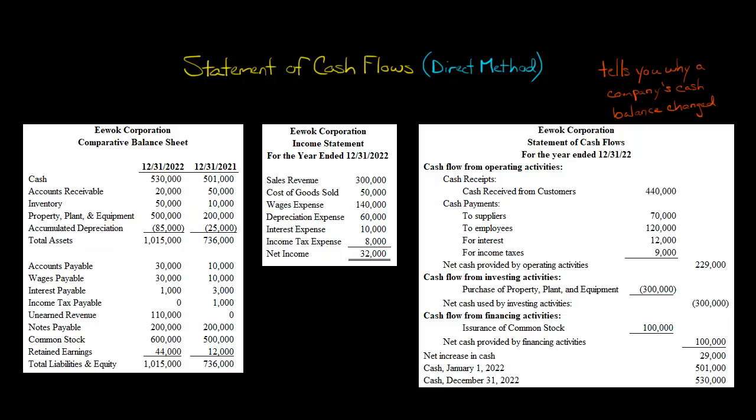The big difference between the direct and the indirect method is the way that the operating activities section is presented. But let me back up and give you a general overview in case you've never seen anything with a statement of cash flows before.